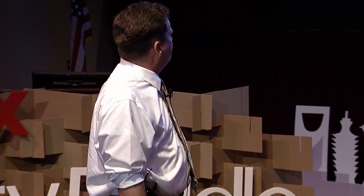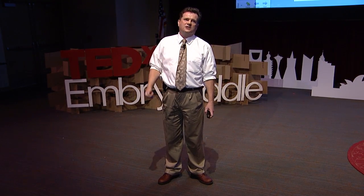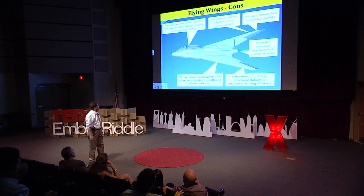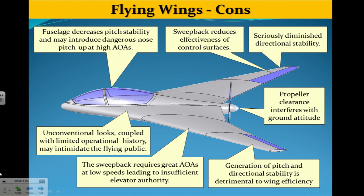Because of the propeller, when you need to take off or land you must lift the nose, risking striking the ground with the propeller. To fix that, you would use long landing gear — which then creates very high landing loads that the structure must react, making it heavier than first thought. The generation of pitch and directional stability is detrimental to wing efficiency, meaning you won't realize all the drag reduction benefits. The FAA requires a single-engine aircraft to stall at or below 61 knots (70 mph), but with this design you may not be able to reach that angle of attack, meaning you couldn't certify the airplane. And unconventional looks coupled with a very limited operational history may intimidate the flying public — something designers tend to forget.